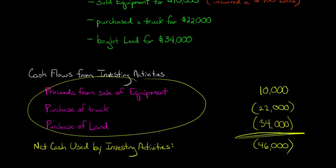Had it been the reverse—if this was a positive $46,000—we would say net cash provided by investing activities.